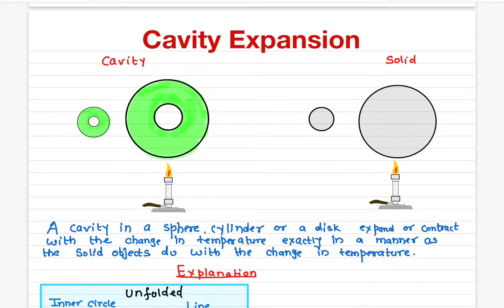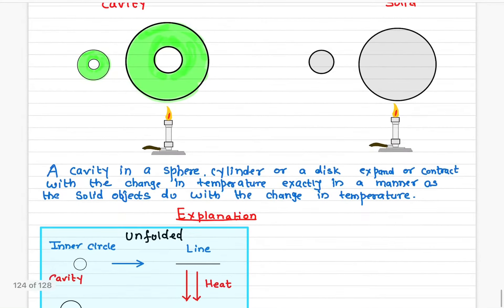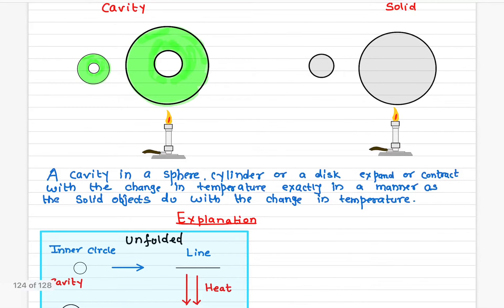But how do you visualize physically? The cavity in the sphere, it could be a cylinder or it could be a disc or it could be inside of any metal or any shape. It will exactly change, or expand, with the change in temperature as if there is a solid object there. The rate of expansion of this cavity will be exactly the same as the rate of expansion of this metal.